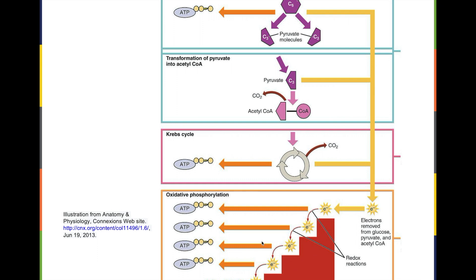Don't worry if this seems like a black box — I will explain it later. You may be wondering where these electrons are coming from. When we break down glucose into little pieces, not only do we use the energy to make ATP, but during cellular respiration the cell strips glucose and whatever little bits of it remain of their electrons. We're really totally disintegrating this glucose molecule — not only breaking it into pieces, but also stealing all of its electrons.